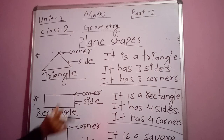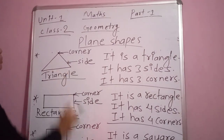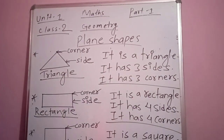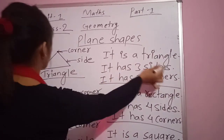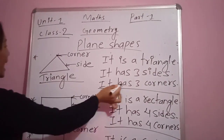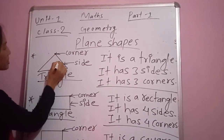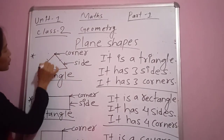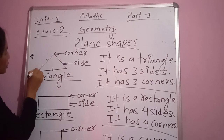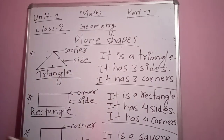I have given a short description about the triangle. It is a triangle. It has three sides — one, two, three. It has three corners — one, two, three. All together there are three corners.